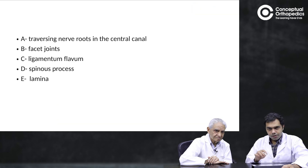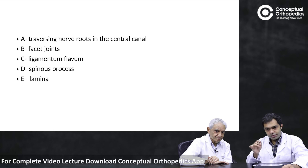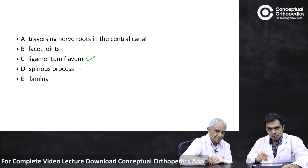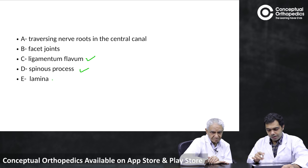To summarize the labeled structures: A was the traversing nerve roots, then the facet joints, ligamentum flavum, spinous process, and lamina.